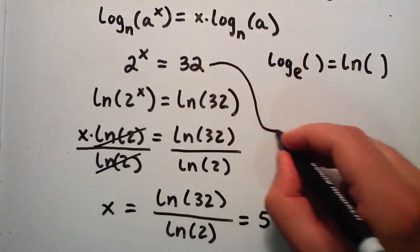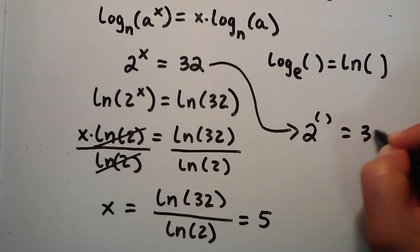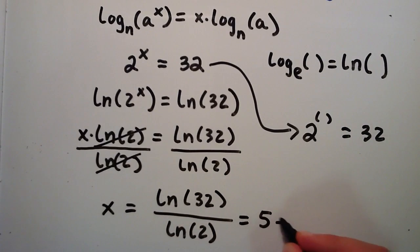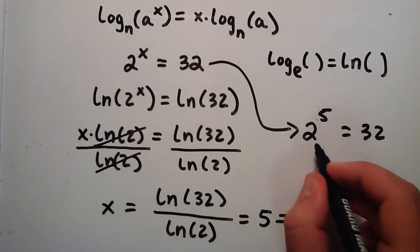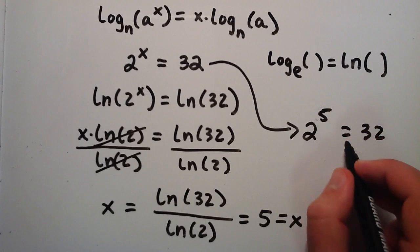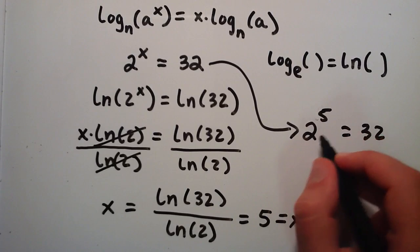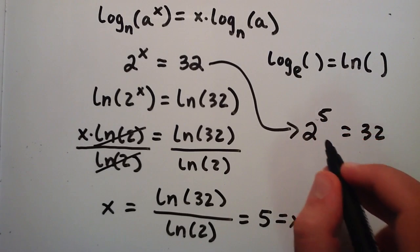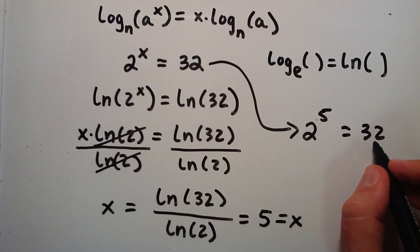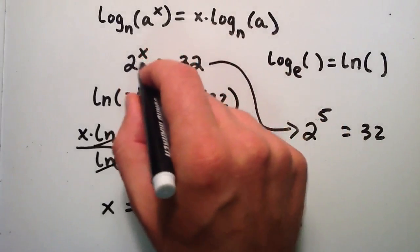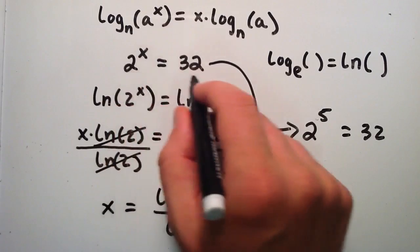Looking back at our expression, 2 to the x equals 32. We just said that x equals 5. If you were to type in 2 to the 5th power into your calculator, you would find that the answer is 32. So 2 to the 5th power means 2 multiplied by itself 5 times: 2 times 2 times 2 times 2 times 2 equals 32. By using this property we were able to figure out what x had to be — in this case, 5.